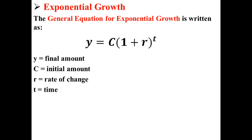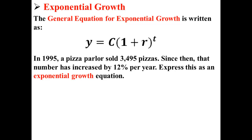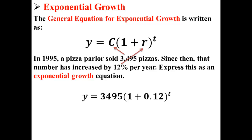Here we're going to try an example. In 1995, a pizza parlor sold 3,495 pizzas. Since then, that number has increased by 12% per year. Express this as an exponential growth equation. Our rate is 12% and our c, our initial value, is 3,495. So we plug those values into the equation, and now we have an exponential growth equation for our pizza parlor: y equals 3,495 times 1 plus 0.12 to the t power.